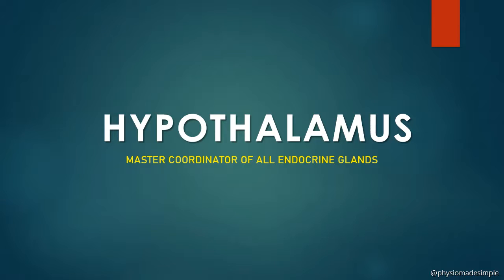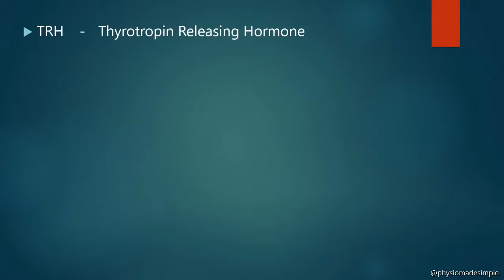The hypothalamus stimulates the anterior pituitary to release hormones. For example, the hypothalamus releases TRH — Thyrotropin Releasing Hormone — which stimulates the anterior pituitary to release TSH — Thyroid Stimulating Hormone. TSH then acts on the thyroid gland to produce thyroid hormones.